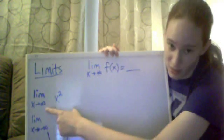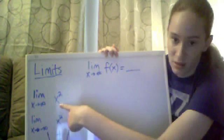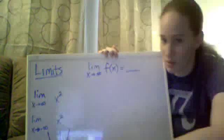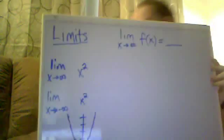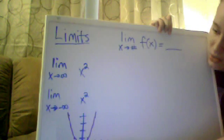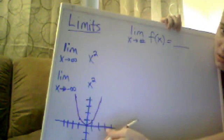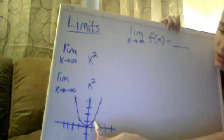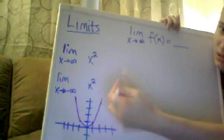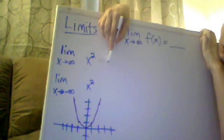So if I have the limit as X approaches positive infinity of something like X squared, what does that equal? Or if I have the limit as X approaches negative infinity of X squared, what does that equal? I have this graph drawn of that function X squared. As my X approaches positive infinity, I'm going to the right on my graph, following along this line, and looking at where my Y values are going. Our Y values just continue to go up and up, which means the limit as X approaches positive infinity of X squared is positive infinity.